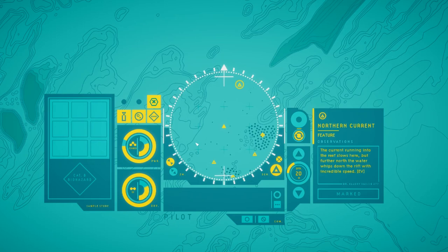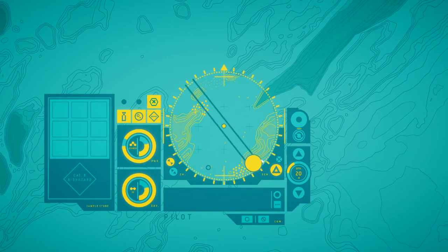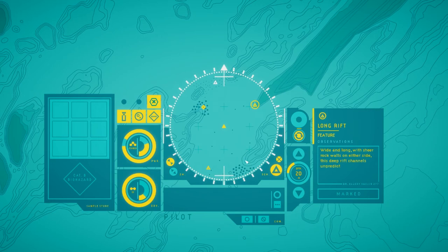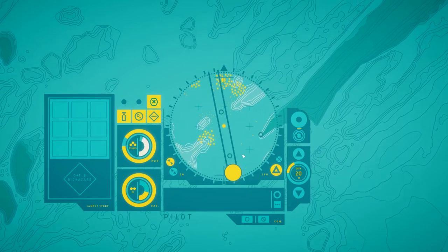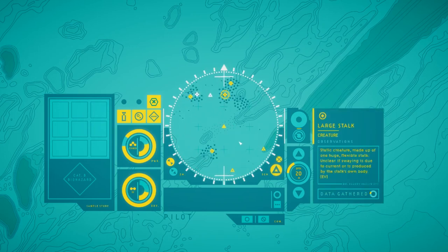Northern current. The current running the reef slows here, but further north, the water whips down the rift with incredible speed. I can't read today. This is so much easier. I feel like the right and left sticks thing just needlessly confuses things on controller. Long rift. Unpredictable currents. That sounds bad. I really like this palette, by the way. It's very simple, but definitely feels very sea-worthy. This arch is covered in hardened stalks. Perhaps the slow current passing through brought the spores to settle here. I wish we had more games like this. You know? Science-y games. You're doing things that aren't just shoot things. And not necessarily just walking sims. You are doing something. It's just not shooting things.